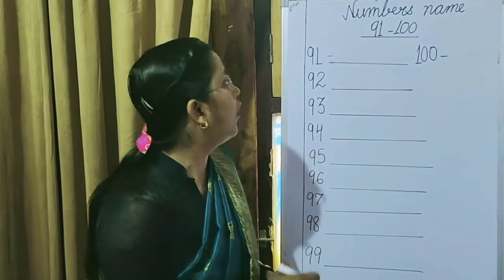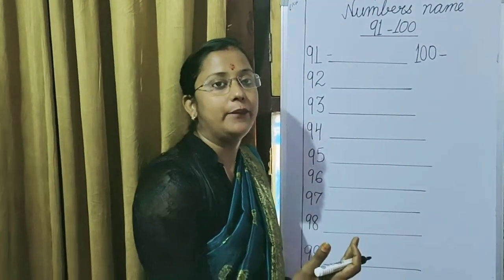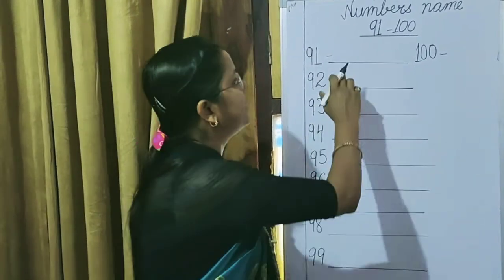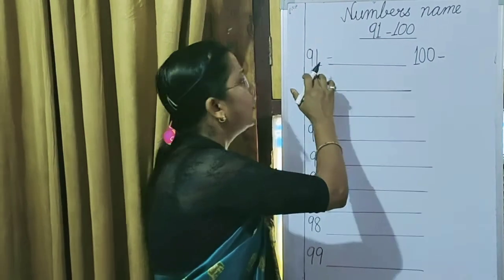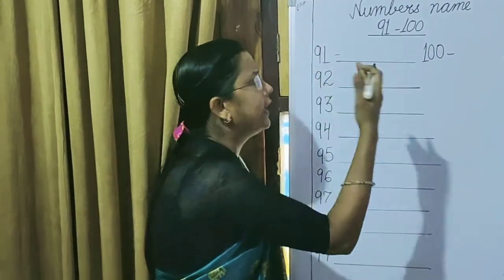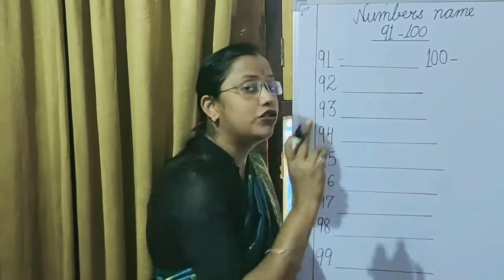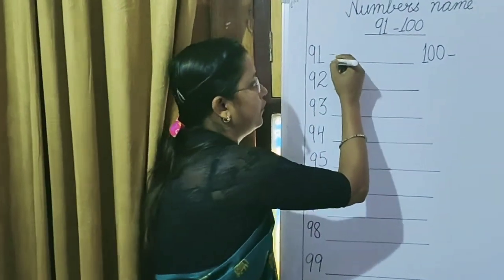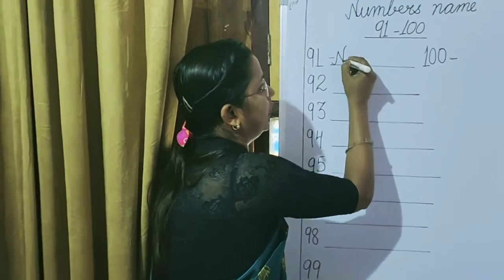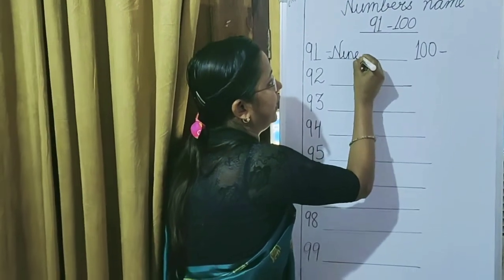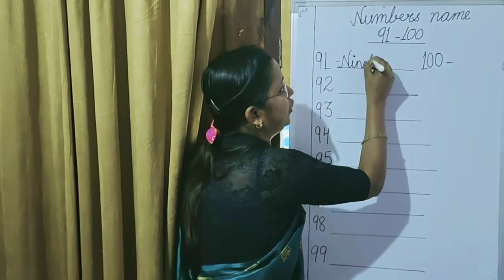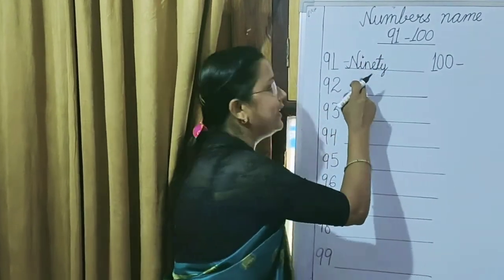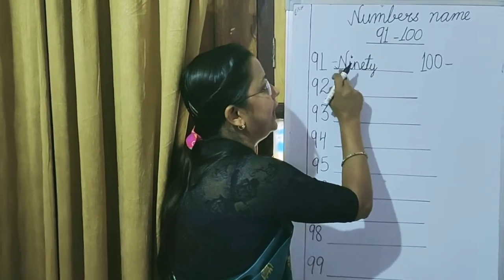So children, how do we write the spelling of 91? First we see the spelling of 90. We write N-I-N-E. If we include T-Y, it becomes 90. N-I-N-E-T-Y — that is 90.